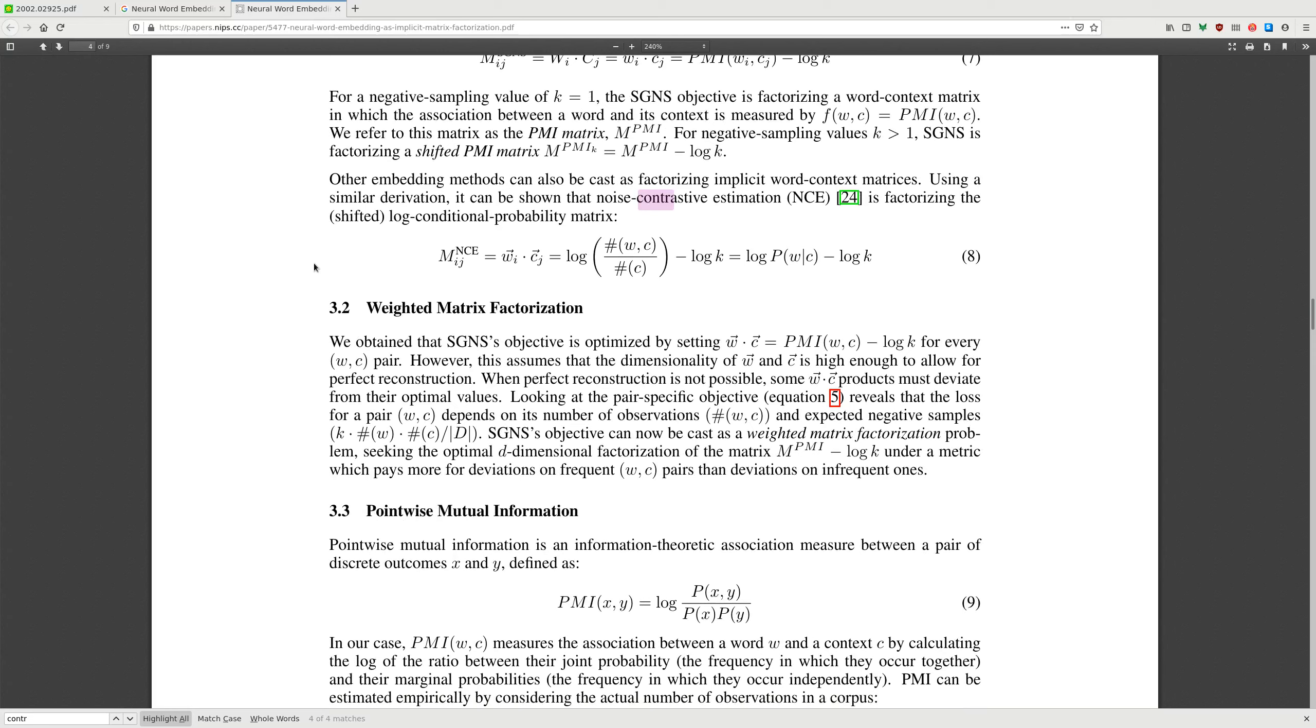Other embedding methods also can be cast as factorizing implicit word-context matrices. Using a similar derivation, it can be shown that noise contrastive estimation is factorizing the shifted log conditional probability matrix.